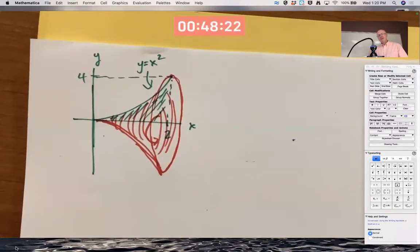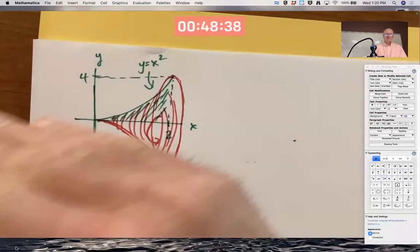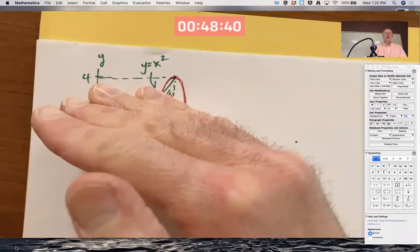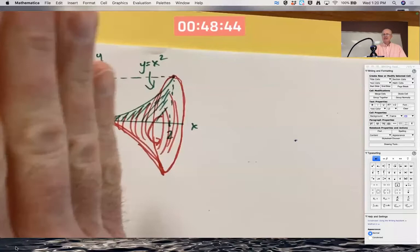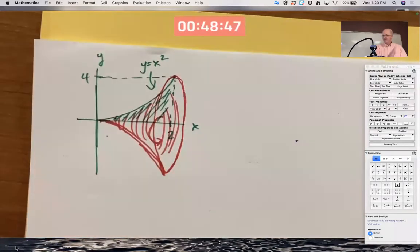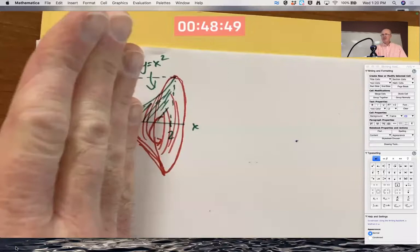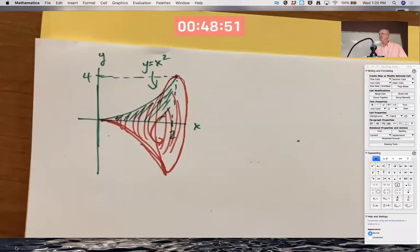But the approach that we used on Monday still works. We want to slice this into thin slices where the cross sections, once again, look like thin wafers, thin hockey pucks if you prefer. So how should I slice it? Should I slice it this way? No. Because I rotated around the x-axis, slice it perpendicular to the x-axis. Imagine my hand as a knife. Slice it perpendicular to the x-axis.